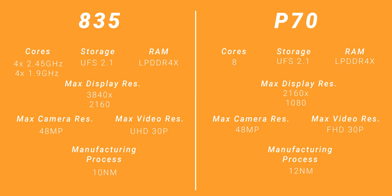Despite the P70 being far newer than the Snapdragon part, and when switching to an even older Snapdragon 820, we start to see why MediaTek is known for their great feature list if lower-end power. The 820 is substantially more capable and still has a far better camera and display specification, however it supports older memory and slower storage, built on an older and far less efficient manufacturing process.